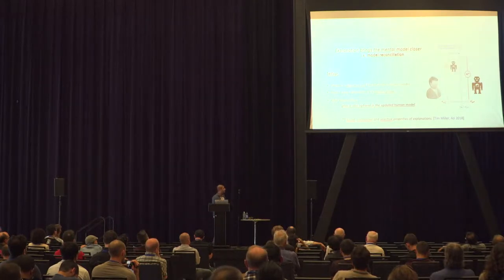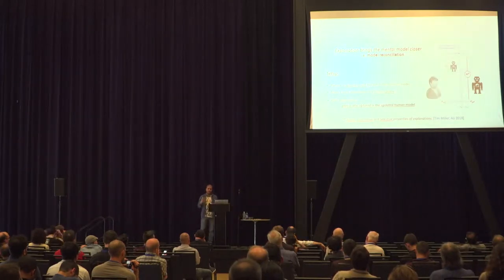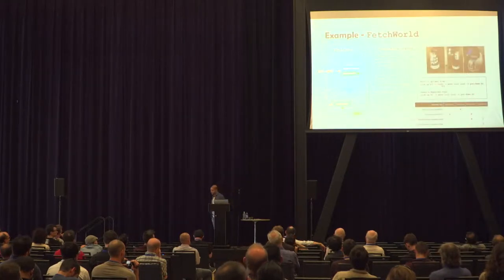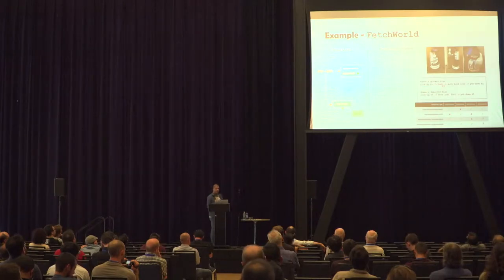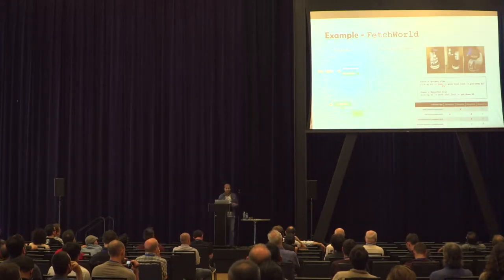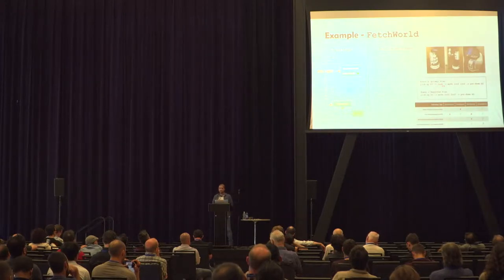We came up with the notion of model reconciliation as a way to formalize the explanation process. The robot produces a plan, and the explanation is in the form of a model update to the human so that at the end both agree that plan is optimal. This has basis in social sciences literature on contrastive and selective properties of explanations. The contrastive property means we ensure the human cannot come up with better alternatives once the explanation process is over. There are many ways to find this model update: some minimize the amount of information in the explanation, others minimize the time to generate it — we looked at these different properties.